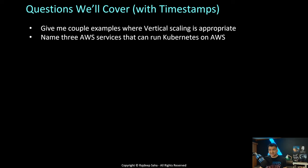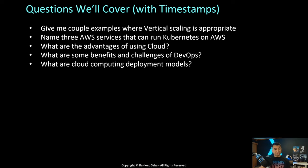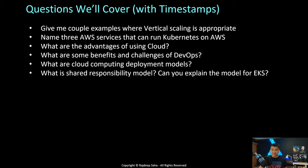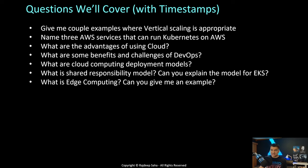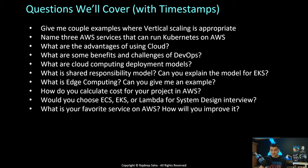Next question: name three AWS services that can run Kubernetes on AWS. What are the advantages of using cloud? What are some benefits and challenges of DevOps? Everyone knows the benefits, but this tests whether you actually worked in DevOps and can identify challenges. Next: what are cloud computing deployment models? What is the shared responsibility model? Can you explain the model for EKS or Elastic Kubernetes Service? What is edge computing? Can you give me an example?